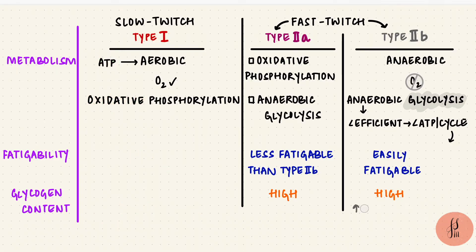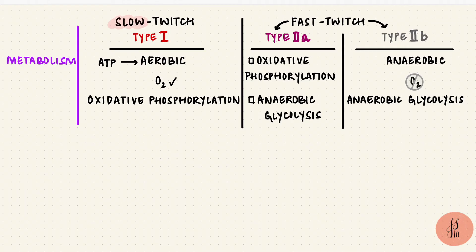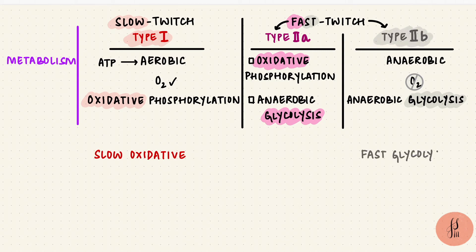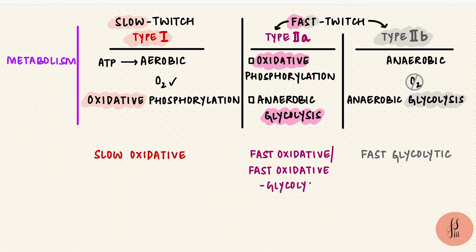If we put the rate of force of contraction and the metabolism pathway together: the type 1 fibers are called the slow oxidative fibers, the type 2b fibers are the fast glycolytic fibers, and the type 2a are the fast oxidative — also called the fast oxidative glycolytic fibers.